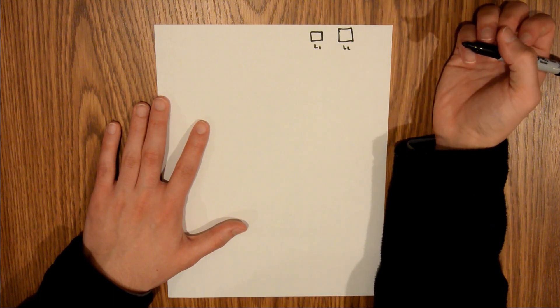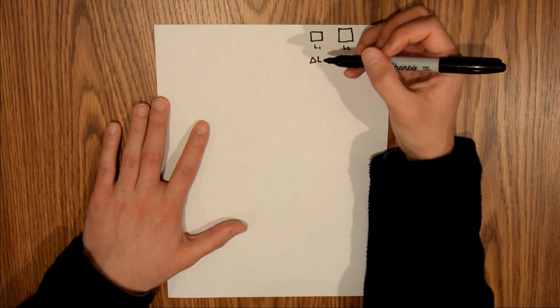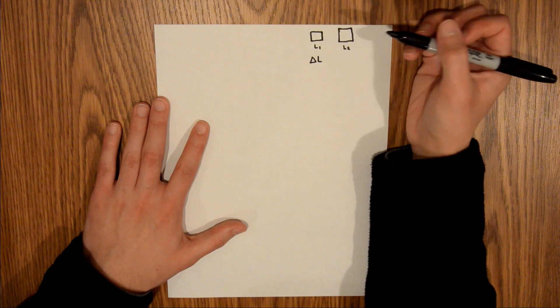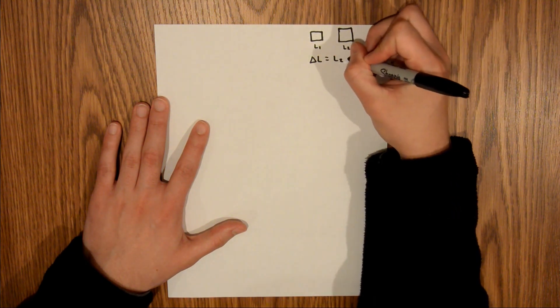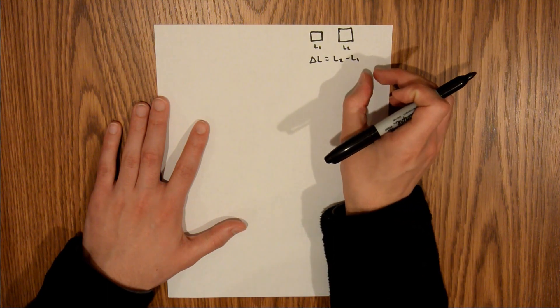And so then I'm going to define a new variable, delta L, which is going to be the change in the side length between the heated and the original. And that's going to be equal to L2 minus L1. So essentially, this is just the amount the length of the side increases by expansion.